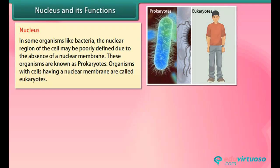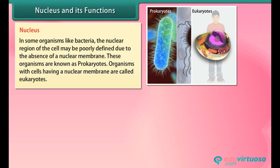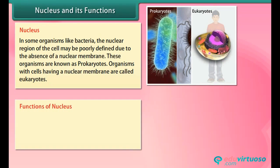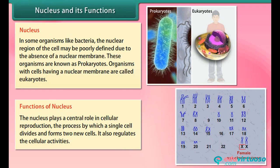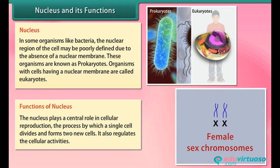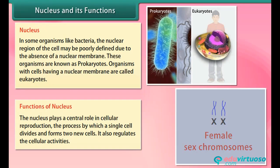In some organisms like bacteria, the nuclear region may be poorly defined due to the absence of a nuclear membrane; these organisms are known as prokaryotes. Organisms with cells having a nuclear membrane are called eukaryotes. The nucleus plays a central role in cellular reproduction — the process by which a single cell divides and forms two new cells — and it also regulates cellular activities.